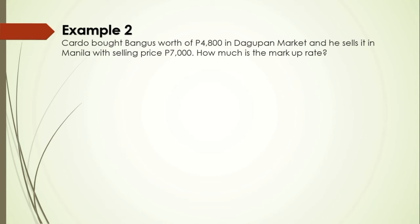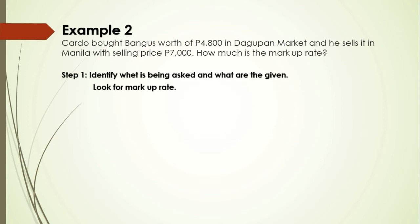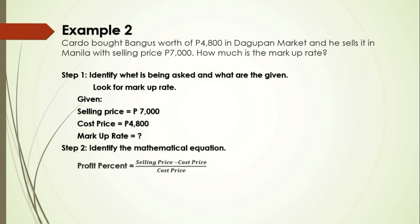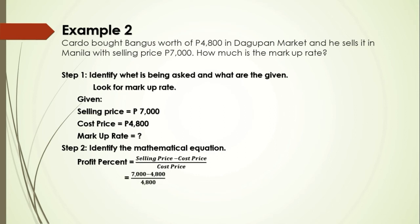Example 2: Cardo bought bangus worth 4,800 pesos in Dagupan market and sold it in Manila with a selling price of 7,000 pesos. How much is the markup rate? The given: selling price is 7,000, cost price is 4,800, and the markup rate is what we need to find. We use the profit percent formula: selling price minus cost price, over cost price. So 7,000 minus 4,800 divided by 4,800 equals 0.4583, or 45.83%. Therefore, the markup rate is 45.83 percent.